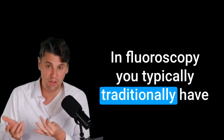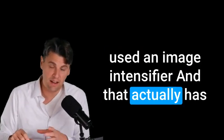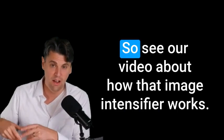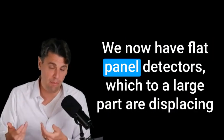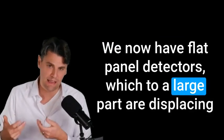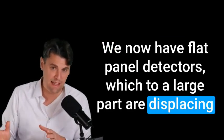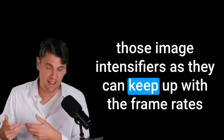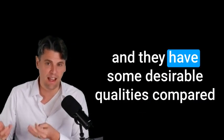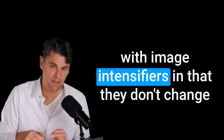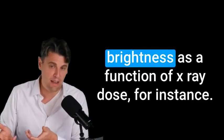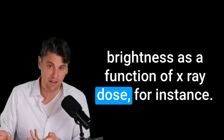In fluoroscopy, you typically, traditionally have used an image intensifier, and that actually has electron optics inside of your image intensifier. So see our video about how that image intensifier works. We now have flat panel detectors, which to a large part are displacing those image intensifiers, as they can keep up with the frame rates, and they have some desirable qualities compared with image intensifiers in that they don't change brightness as a function of x-ray dose, for instance.